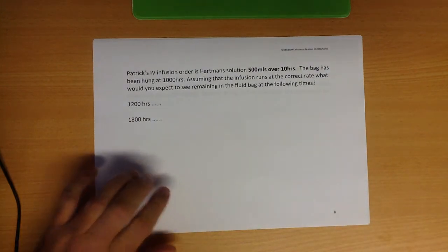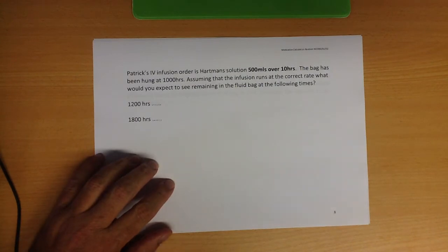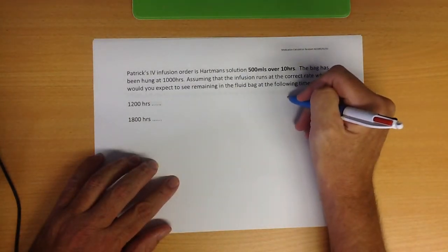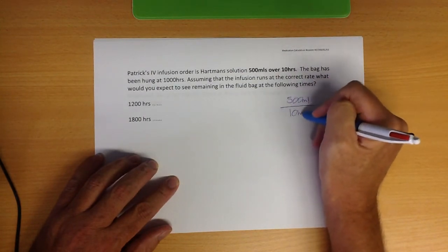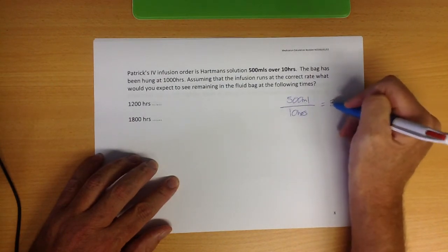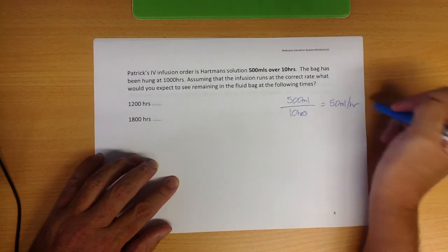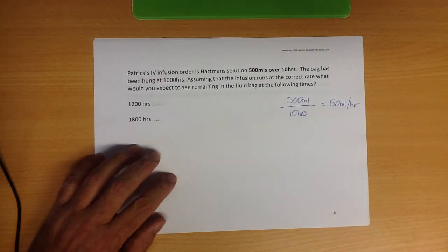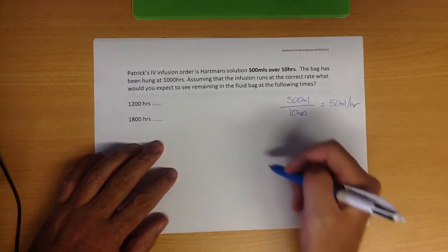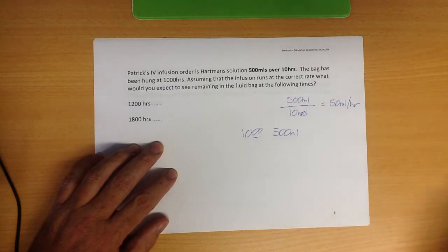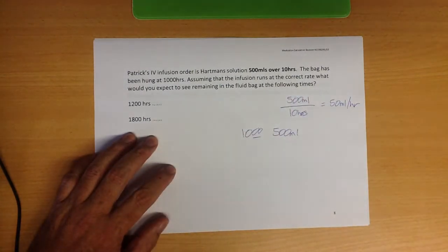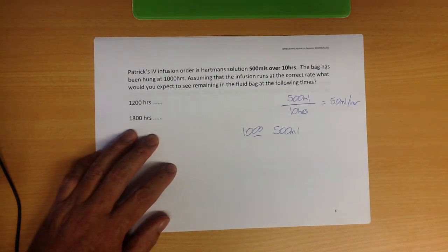This one here is Patrick's IV infusion order is Hartman's solution 500 mils over 10 hours. So 500 mils over 10 hours is going to be 50 mil an hour. Might as well get that sorted out right at the beginning because that makes it nice and easy. The bag has been hung at 10 o'clock, so at 10 o'clock there was 500 mils. Assuming that the infusion runs at the correct rate, of course, drips are never positional are they? What would you expect to see remaining in the fluid bag at the following times?